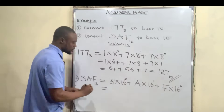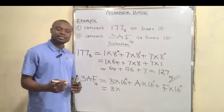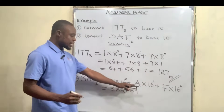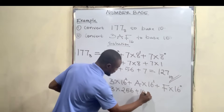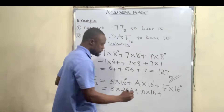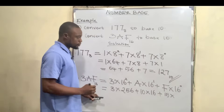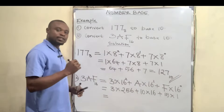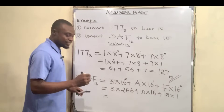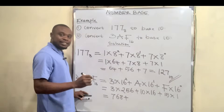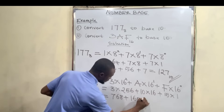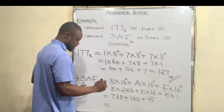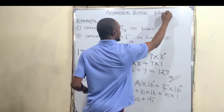Now 3 multiplied by 16 squared: 16 times 16 is 256, so we have 3 times 256. A, as I said initially, is 10, so we have 10 times 16 raised to the power of 1, which is 16. F is 15, so we have 15 times 16 raised to the power of 0, which is 1. So we have 3 times 256 is 768, plus 10 times 16 is 160, plus 1 times 15 is 15.